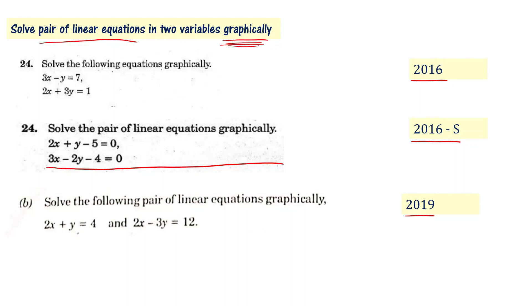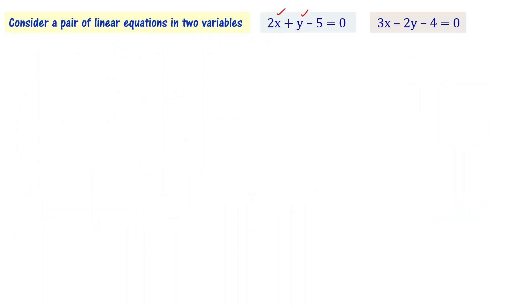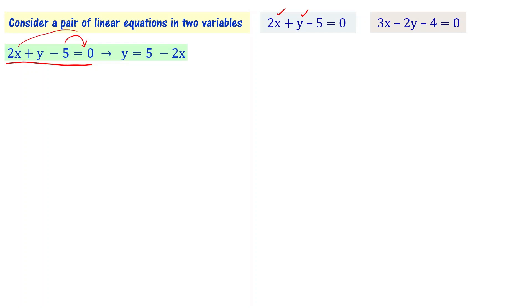The first equation is 2x + y - 5 = 0. The second equation is 3x - 2y - 4 = 0. For the first equation, transposing -5 and 2x gives us y = 5 - 2x.